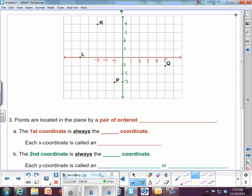All right, so number three, points are located in the plane by a pair of ordered coordinates. Ordered means there's an order. The first one is a specific one, and the second one is a specific one. And so, the first coordinate is always the X coordinate. That's the order. You got to have X's and Y's. X comes before Y in the alphabet. That should be easy to remember. The X coordinate always comes first.